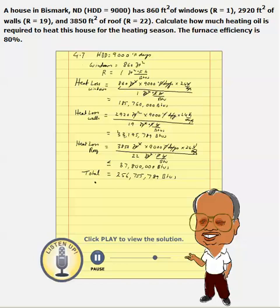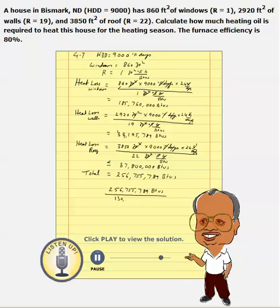The furnace efficiency is given, and we are using heating oil in this case. Heating oil provides 130,000 BTUs per gallon — so how much is required? We need 256,755,789 BTUs. When we buy heating oil, we get 130,000 BTUs for every gallon, but this is theoretical.